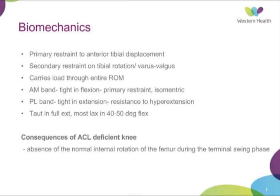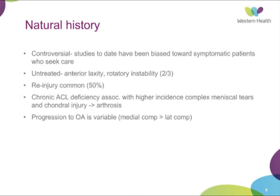In terms of biomechanics, the ACL acts as a primary restraint to anterior tibial translation or displacement, and a secondary restraint to tibial rotation and valgus. It carries loads through the entire range of motion of the knee. The anterior medial bundle is tight in flexion and acts as a primary restraint — it's isometric. The posterior lateral bundle is tight in extension and is mainly a resistance to hyperextension of the knee. The ACL is taut in full extension and most lax at about 40 to 50 degrees of flexion.